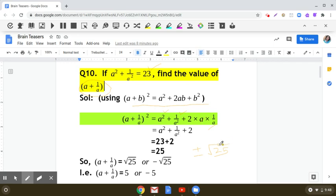Square root of 25 is 5. So a + 1/a is either 5 or -5. So this is how we write it.